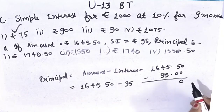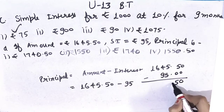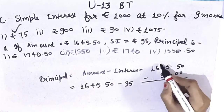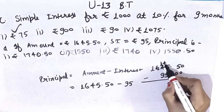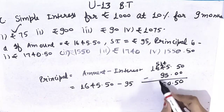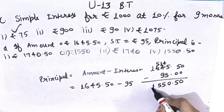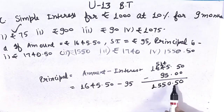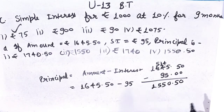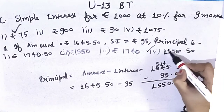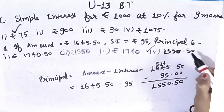Working through the subtraction: 0 minus 0 is 0. 5 minus 0 is 5. Decimal point. 5 minus 5 is 0. 4 minus 9 — borrow needed, becomes 14 minus 9 is 5. Carry forward 1. So our answer is Rs.1,550 and 50 paise. The last option is correct — Rs.1,550 and 50 paise.